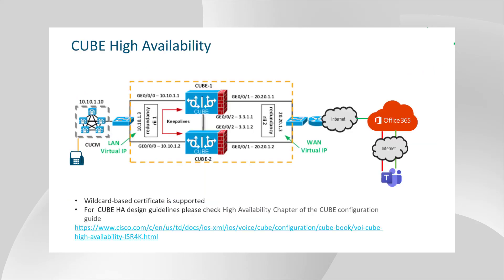Lastly, in this diagram, a Microsoft Teams user outside of the enterprise network is having a call to a Cisco IP phone on-premises.